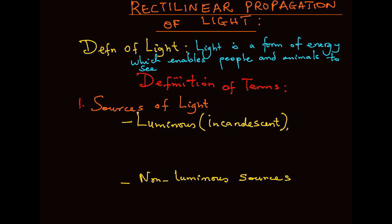Definition of terms used in light. We have sources of light which are basically categorized into two. We have the incandescent or luminous sources. In this case we have bodies that emit their own light. Luminous bodies or sources consist of bodies that emit their own light.